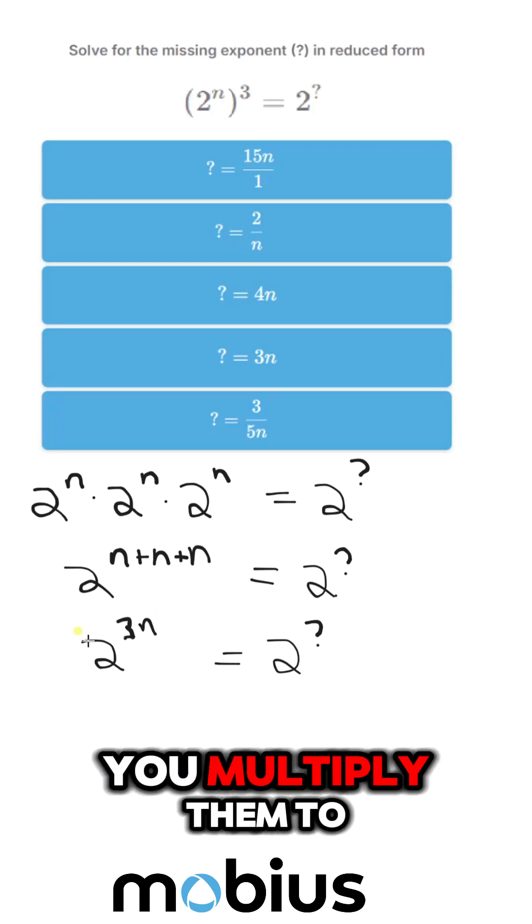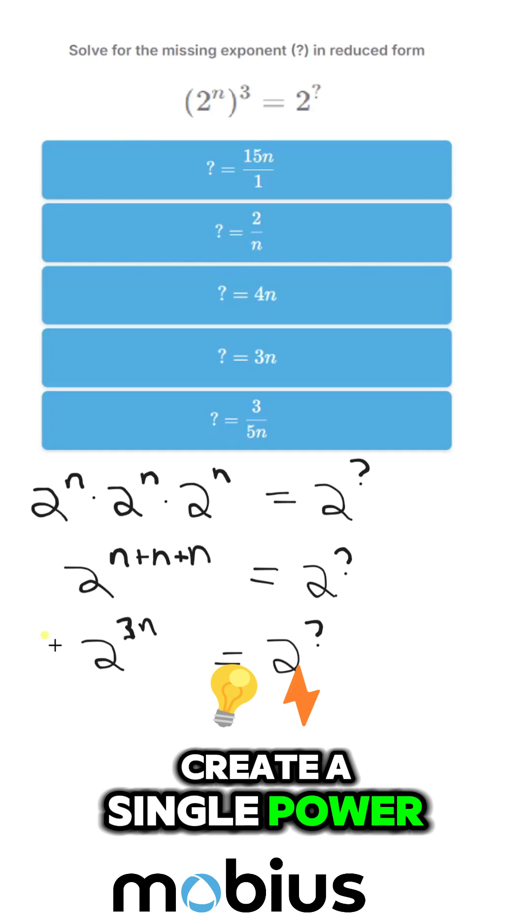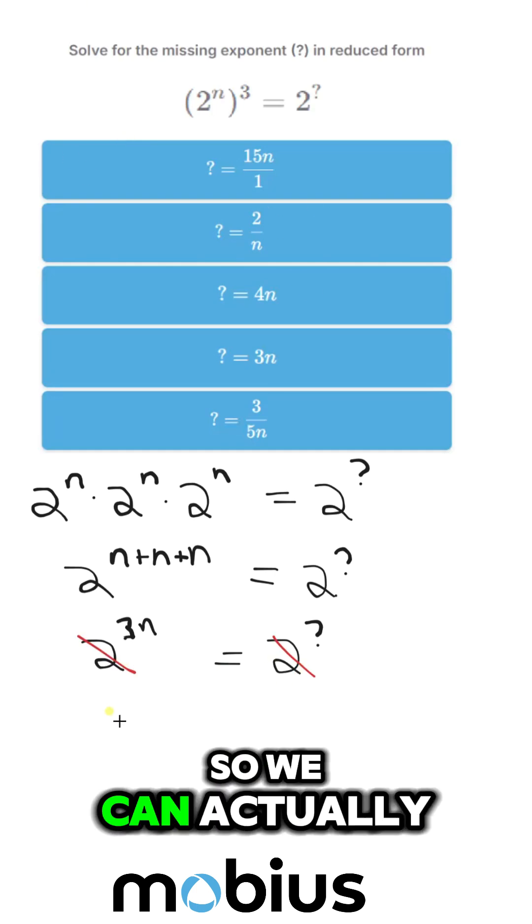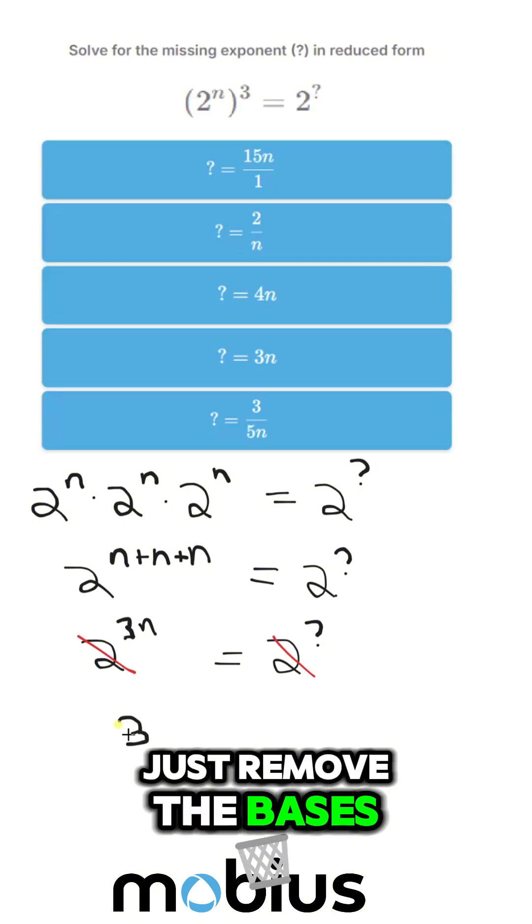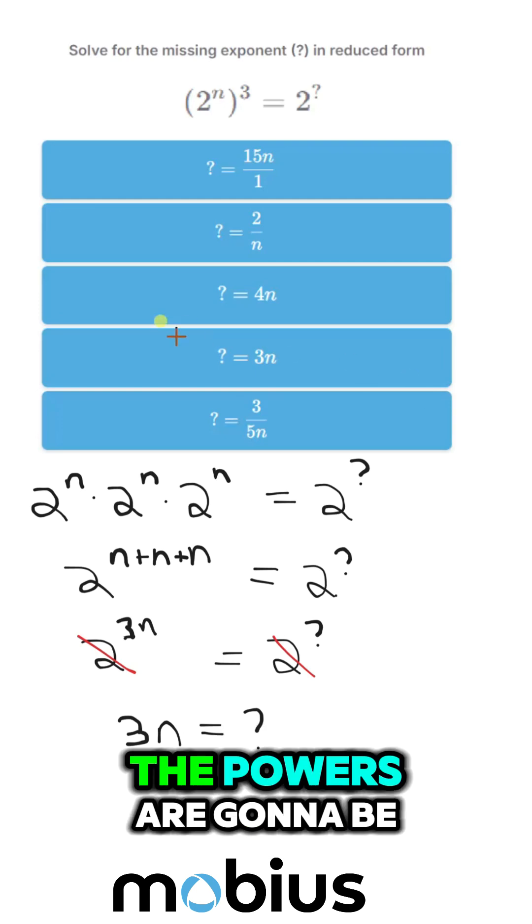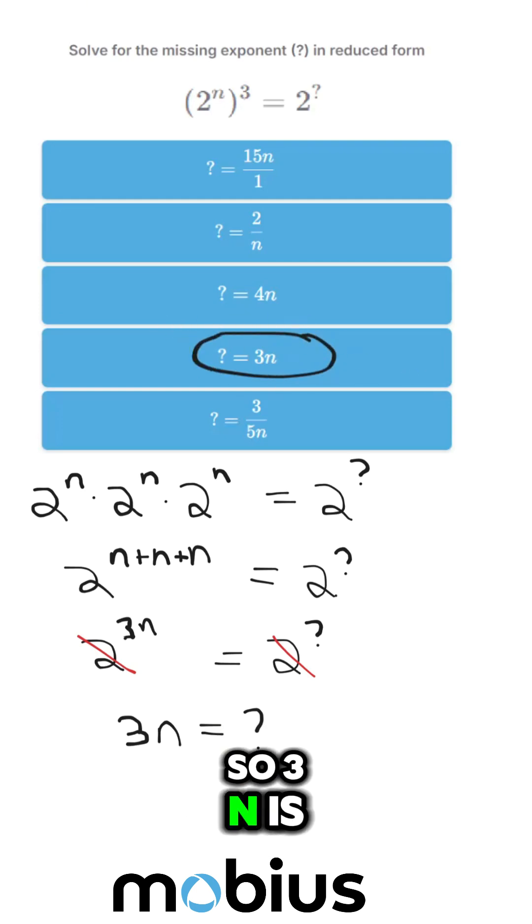Our bases are the same here, so we can actually just remove the bases. And what we're left with is that our exponents, the powers, are going to be the same. So 3n is equal to our mystery variable, and that's our answer right here.